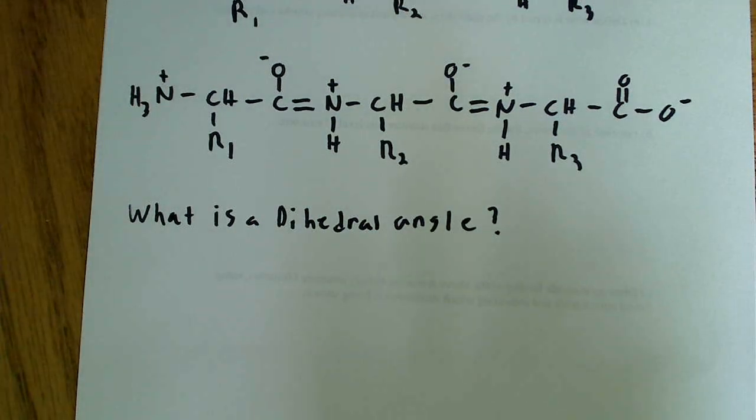And dihedral angles are basically phi and psi angles between the N and C alpha and the C alpha and the C that have a certain range of allowable values. So there's a specific range of allowable values between the C alpha and the nitrogen and the C alpha and the C.